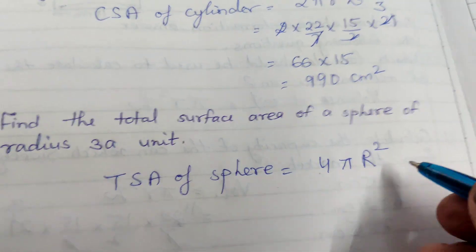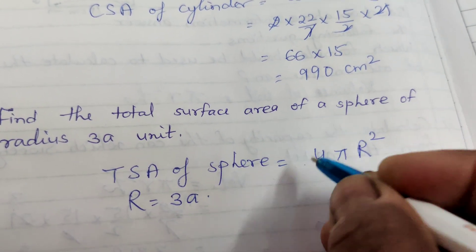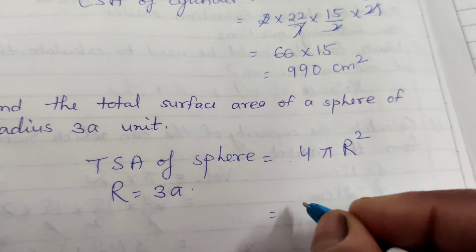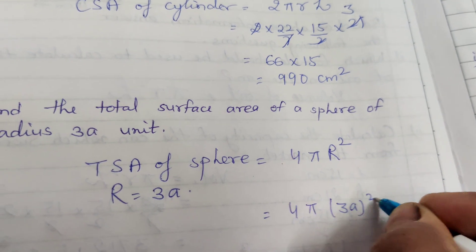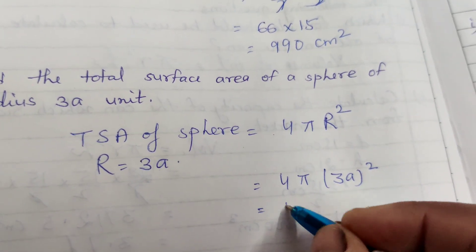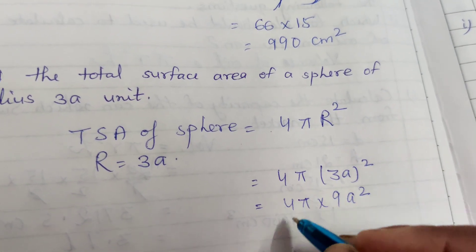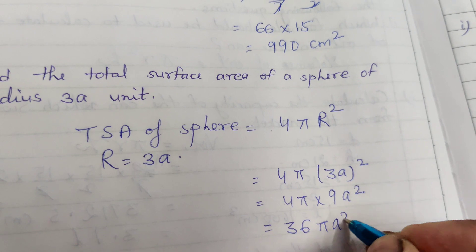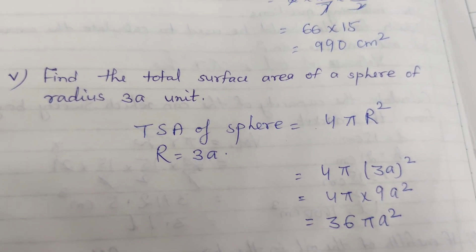The sphere radius if 3A unit, if R equal to 3A, then the surface area is 4 pi 3A whole square. It is equal to 4 pi into 9A square. 9 into 4, 36 pi A square. These are the 5 questions related to the case study.